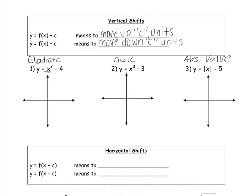Here is the function f of x and we're adding four to it — that's a plus c — so we're going to move this up four units. We draw in the parent function first. Since we know it's a quadratic, our basic function is y equals x squared, which looks like this. We want to shift this up four units, so we put four tick marks and draw a new vertex with the parabola shifted up four units.